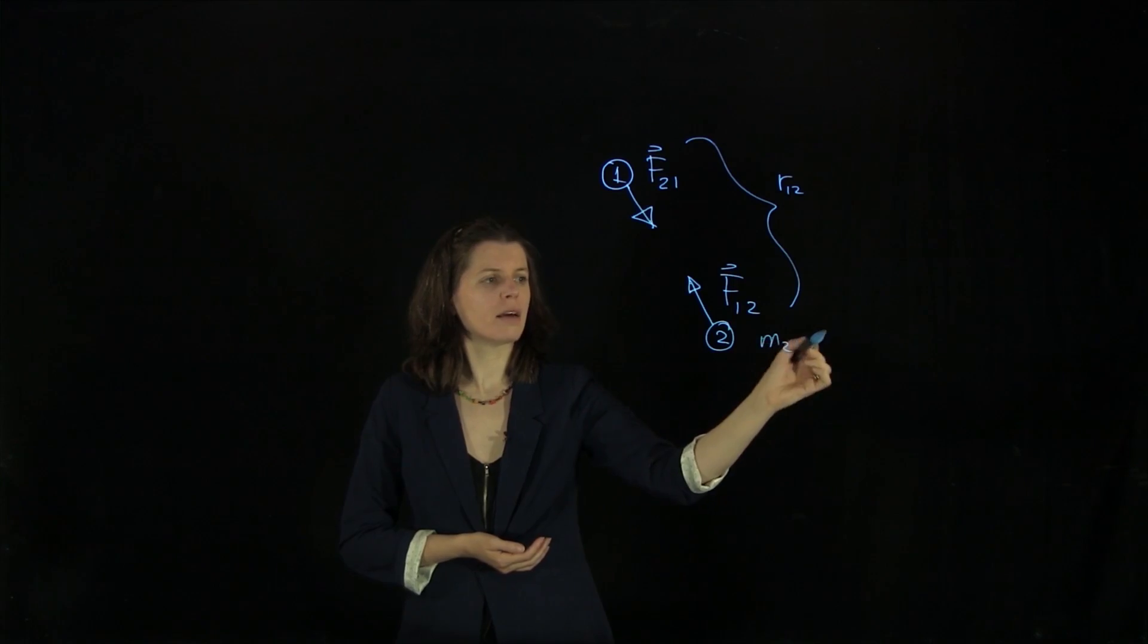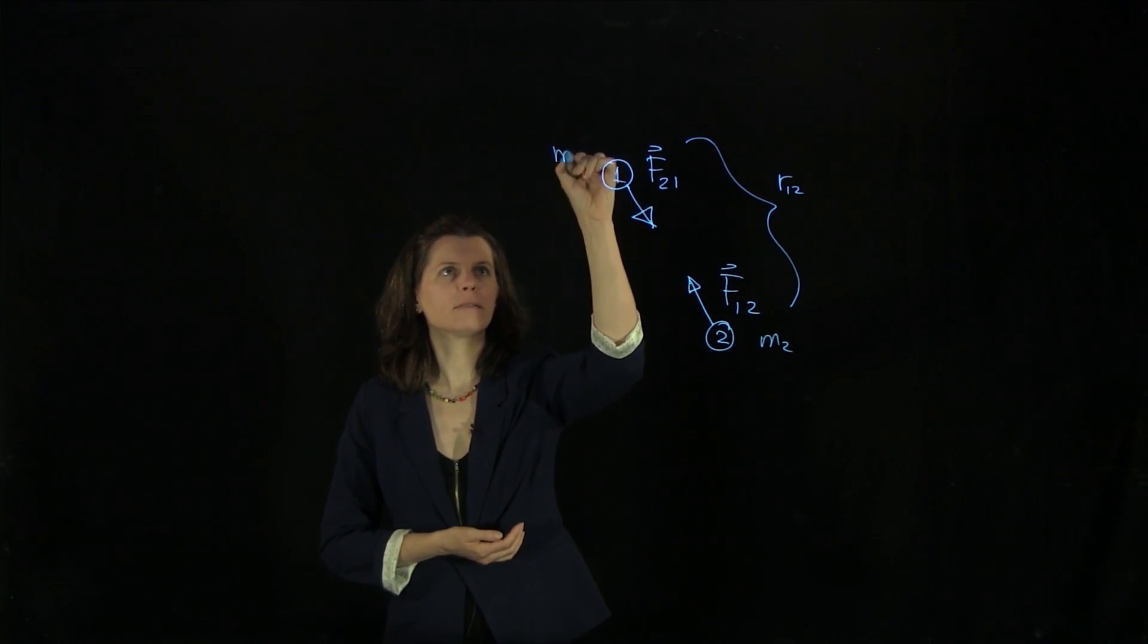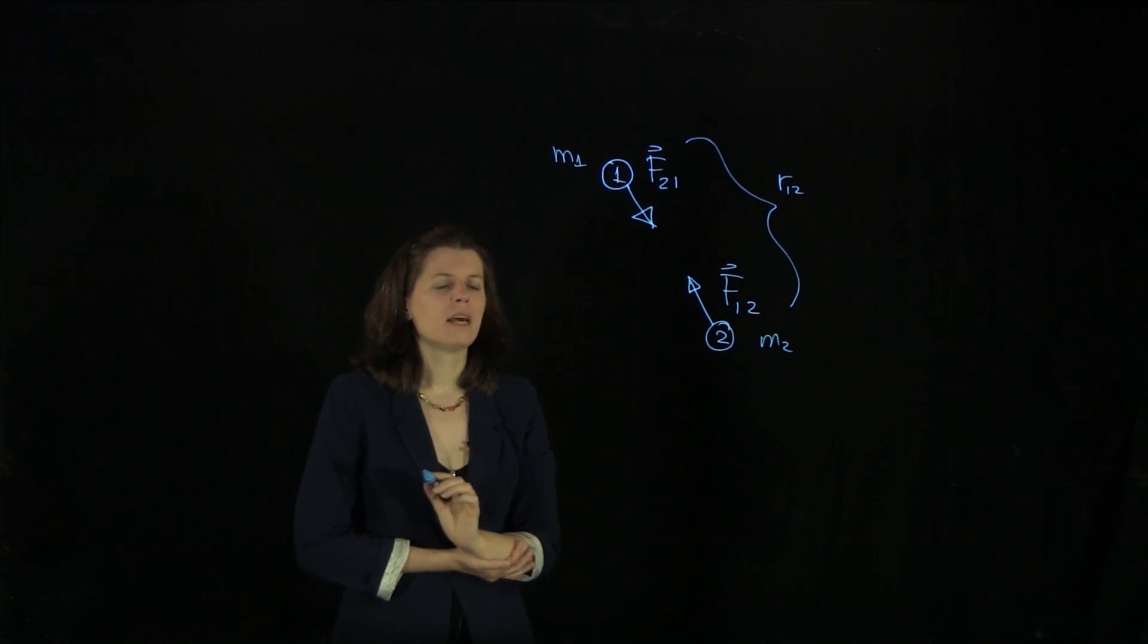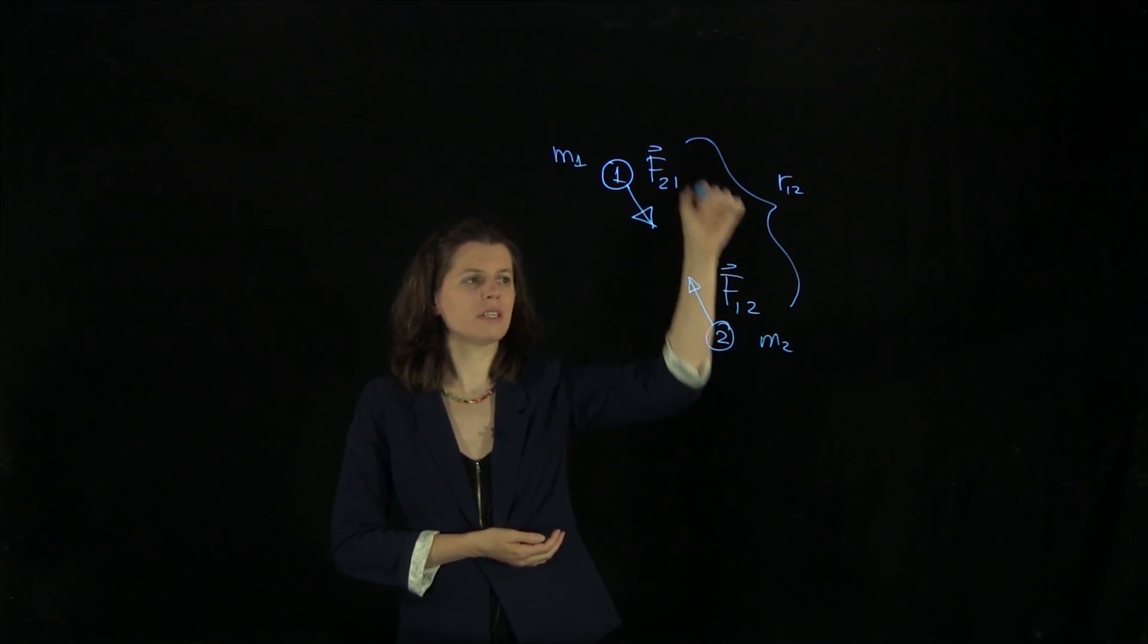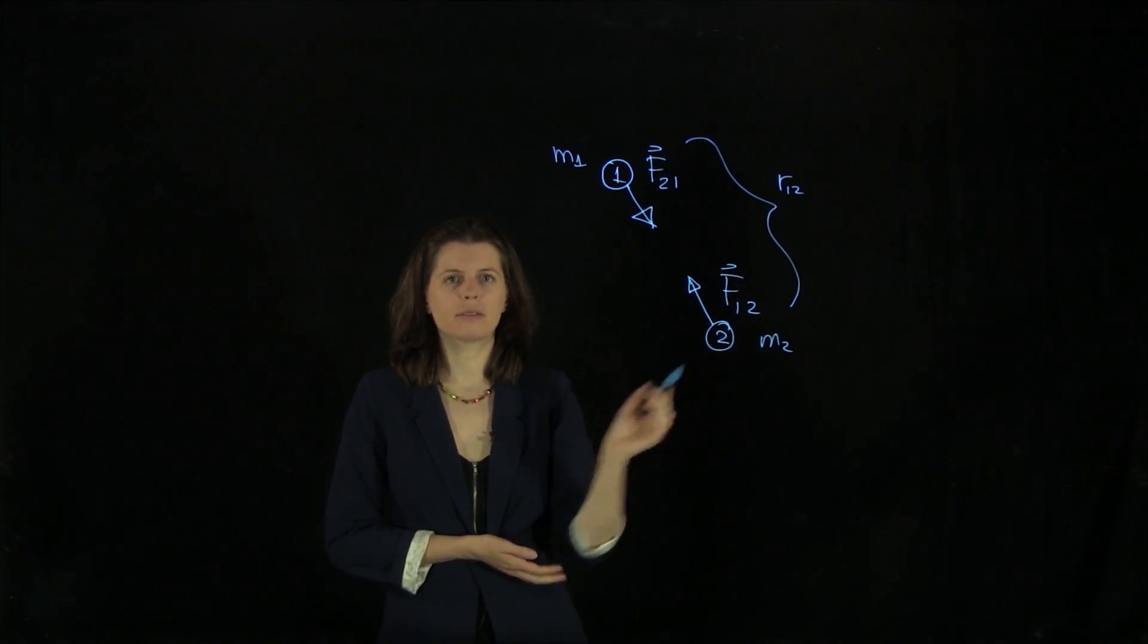So this one has a mass m2, and this one has m1. And it is also proportional to the square of the distance between the two objects.